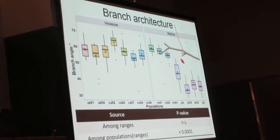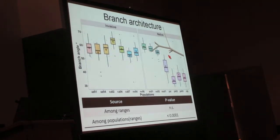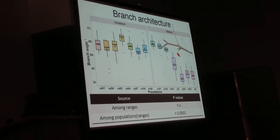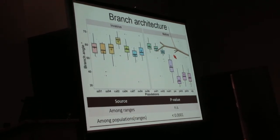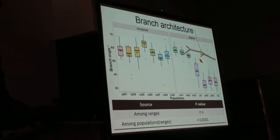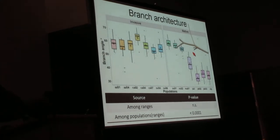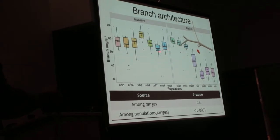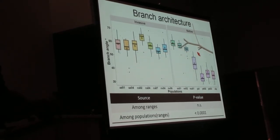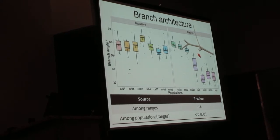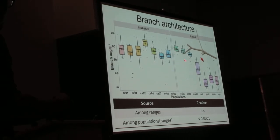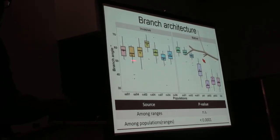Now moving on to my first set of results on branching traits. I'm showing you branch angle, how wide are the branches spread in the plant. When we compare the variation in the two ranges, you can already see that the native range has much more variation in mean trait values compared to the invasive range. But even though I observed these differences in means between the two ranges, I didn't find anything significant.